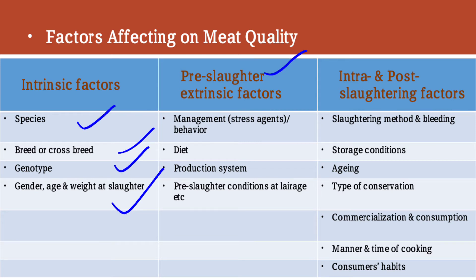The second factor is extrinsic factors. Pre-slaughter extrinsic factors include management, stress agents, behavior of the animal, and diet of the animal before slaughtering — such as milk or milk replacement, weaning diet — as well as the chemical composition and physical status of the meat, the production system in which the animal is raised, and pre-slaughter conditions.